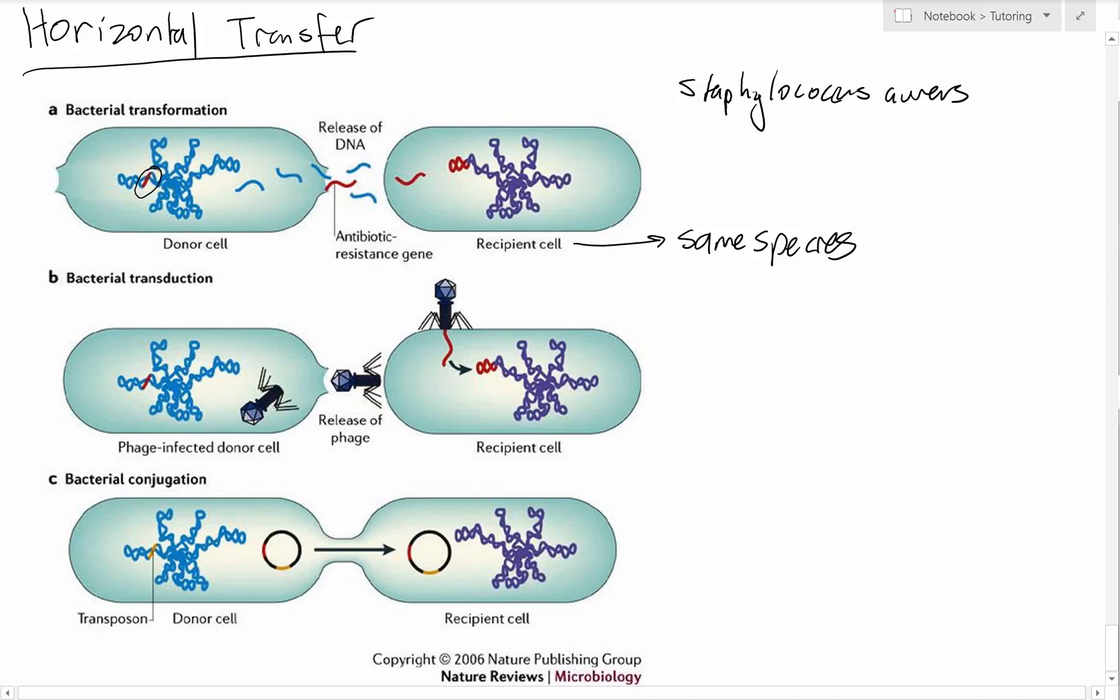Again, you have a donor cell that's got a particular gene of interest or a plasmid, and for whatever reason this cell lyses and its membrane falls apart. A competent cell of the same species as the recipient cell can uptake that DNA from the environment and incorporate it into its own genome. This can be an antibiotic resistant gene as well.